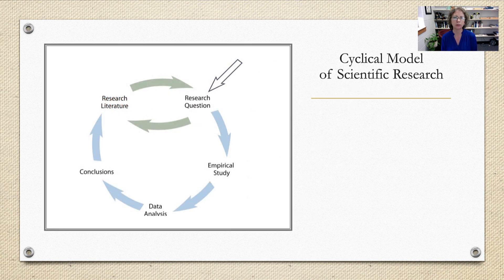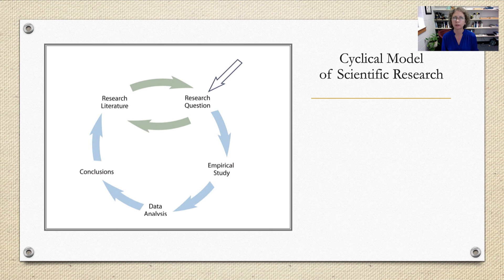The cyclical model always starts with the research question — developing a question that can be turned into an empirical study, so that we have a testable hypothesis and can collect data from a representative sample, analyze the data, and come to conclusions. Then we circle around again to see where the next questions take us. The development and testing of a theory goes through repeated iterations — that's the cyclical model.